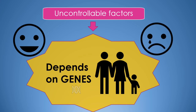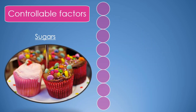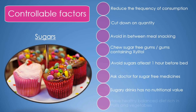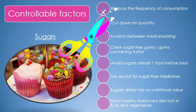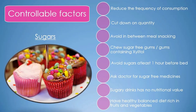Sugar is a known culprit in causing decay, so it's crucial that we reduce it — especially added sugars. It's not easy to give up sugar in the long run, so we can plan for sweet time. The frequency of consumption of sugars should be reduced, and the quantity cut down. The WHO recommends limiting added sugars to less than 10 teaspoons per day for adults and less than 5 teaspoons per day for children.